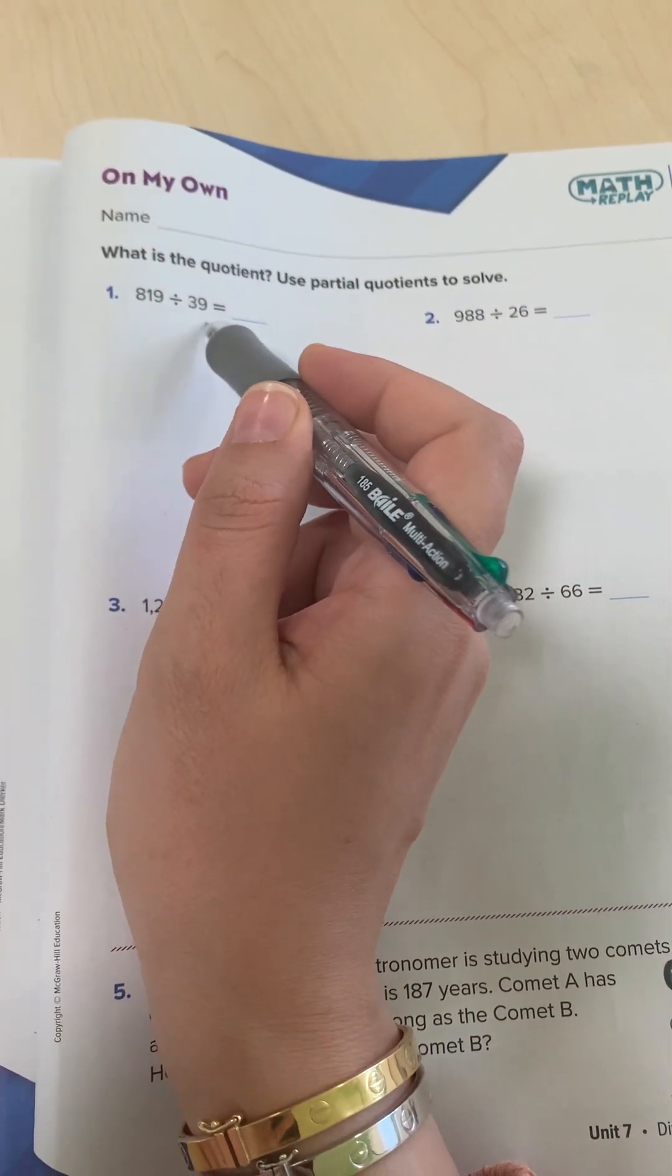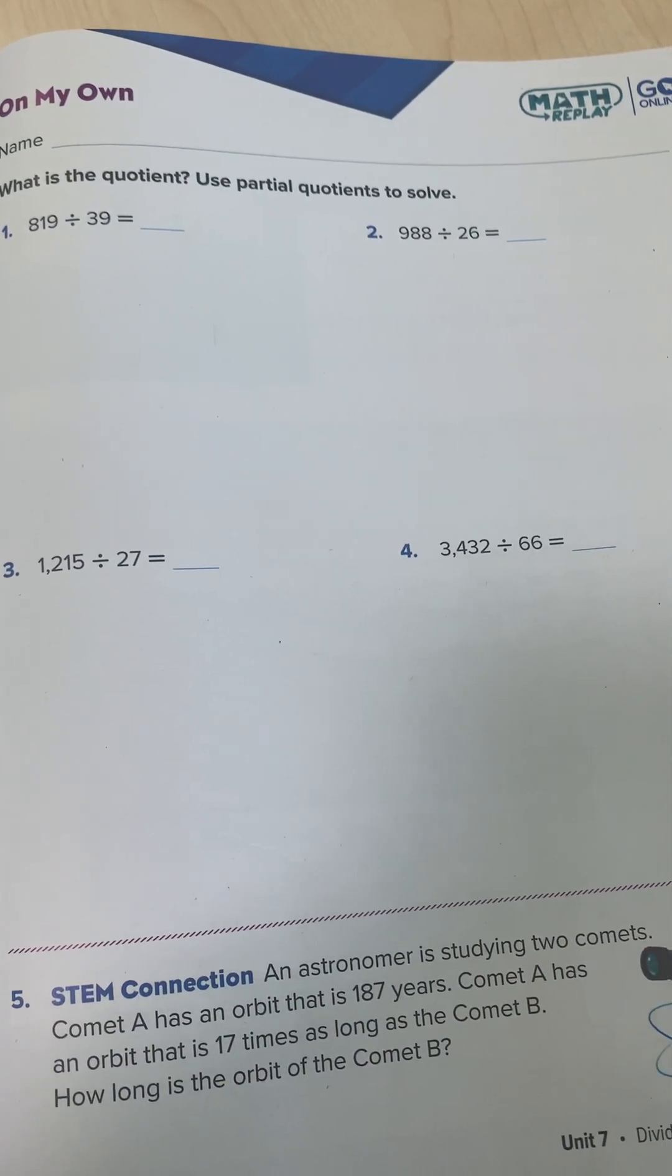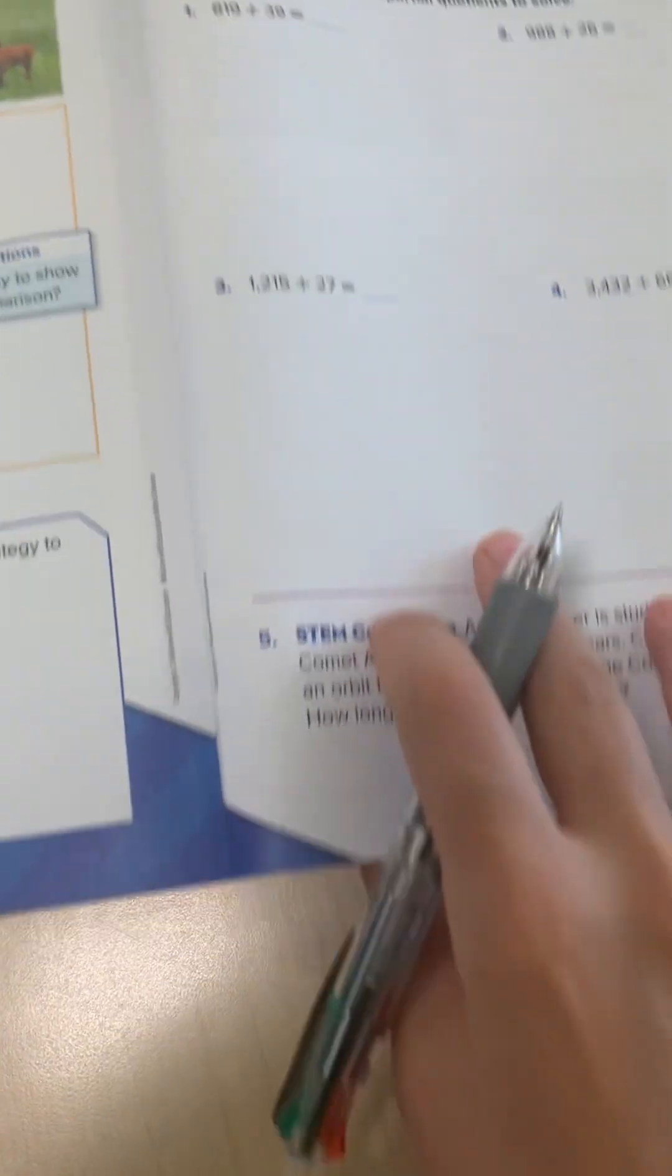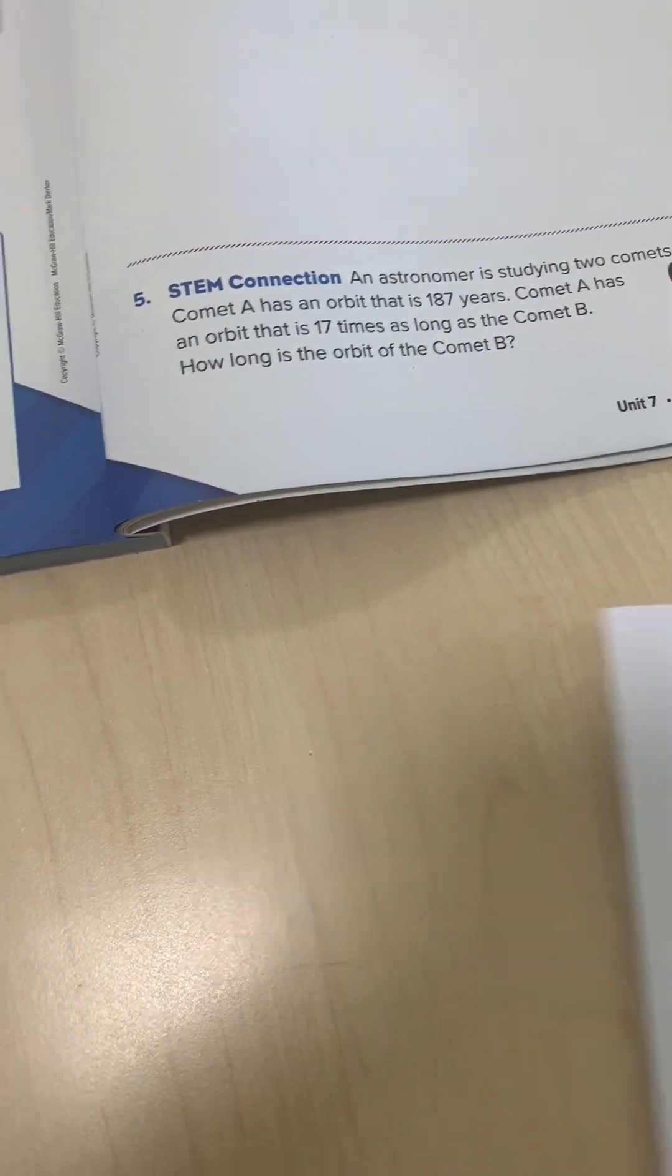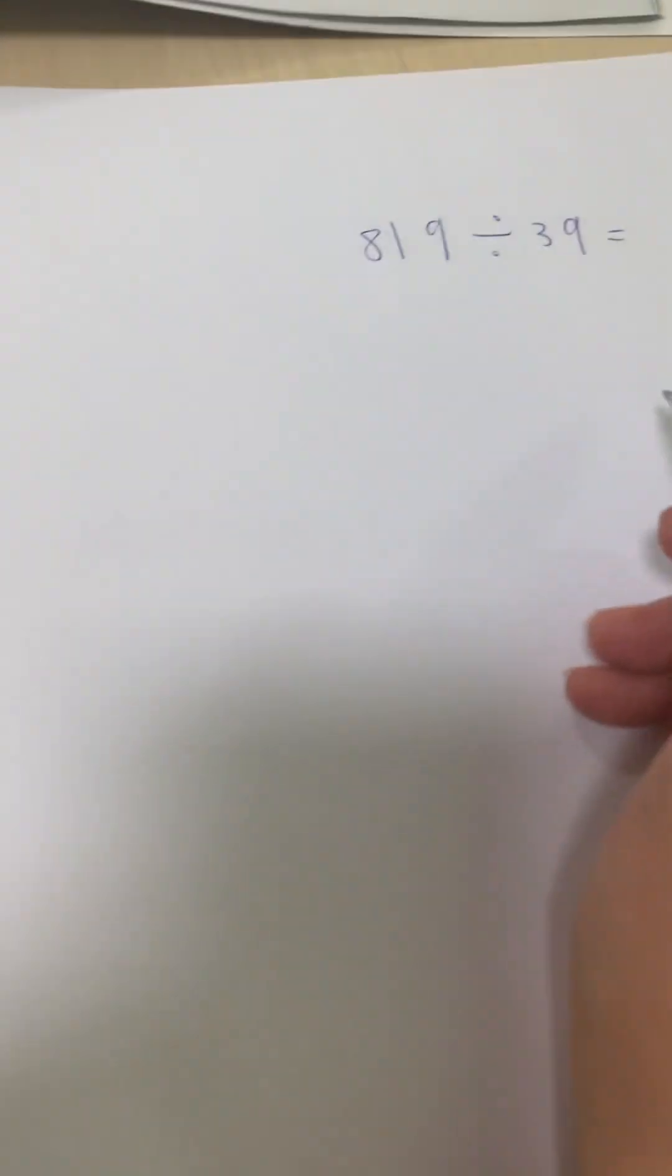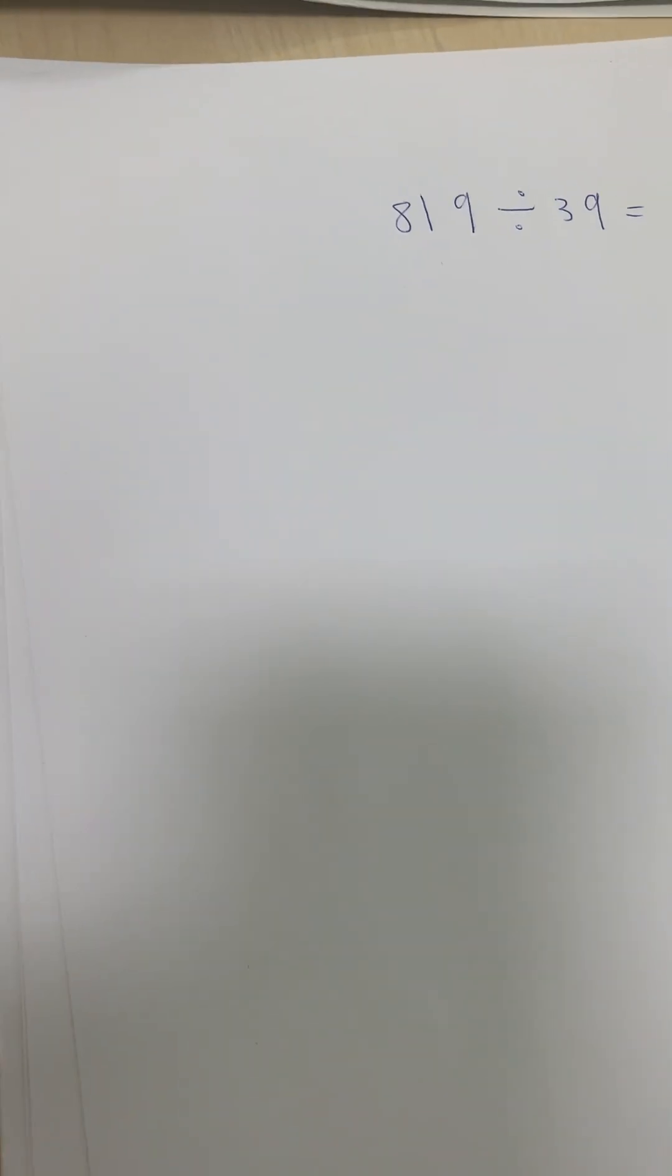819 divided by 39. In the previous lesson, I did it vertically. Here I will put it in this form.